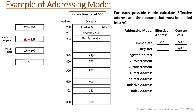In register indirect mode, the processor register does not give you the operand directly — it gives you the address of the operand. Processor register R1 has value 400, so the effective address is 400. Whatever value is stored at memory address 400 is your operand, and that content will be loaded into the accumulator.